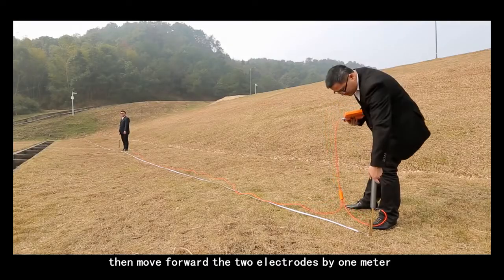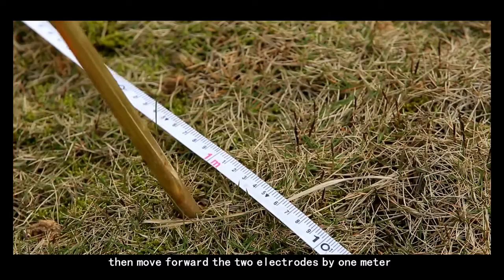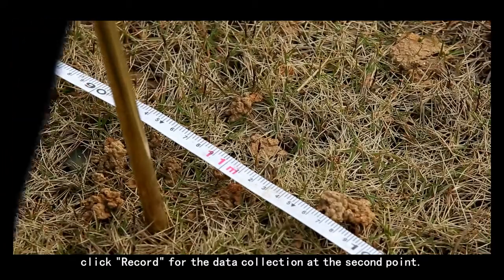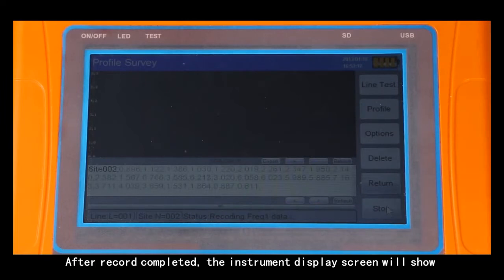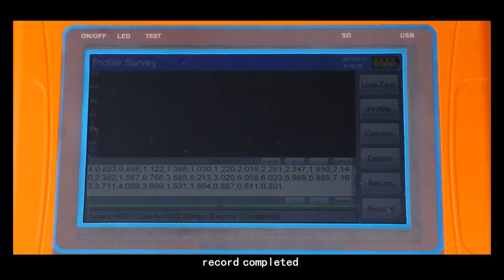Then move forward the two electrodes by one meter. Click record for the data collection at the second point. After record completed, the instrument display screen will show record completed.